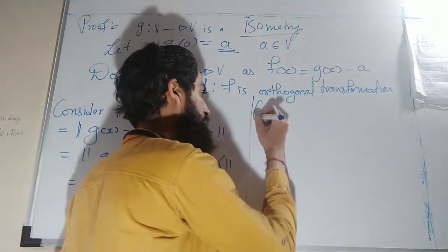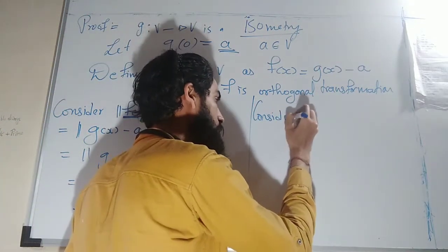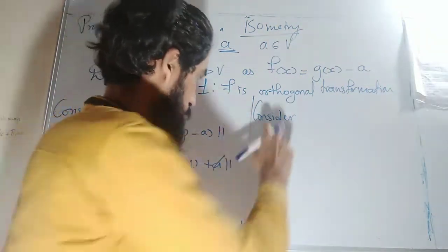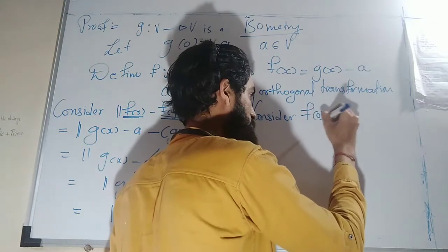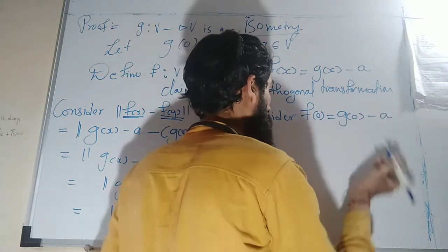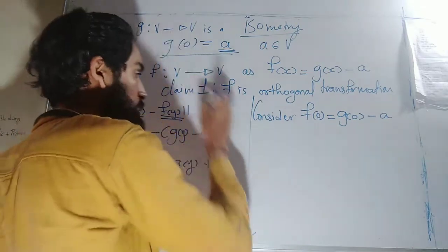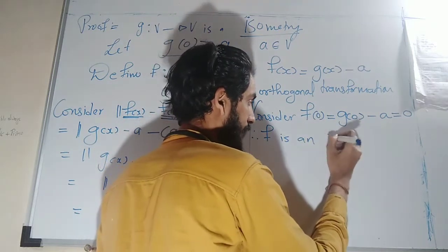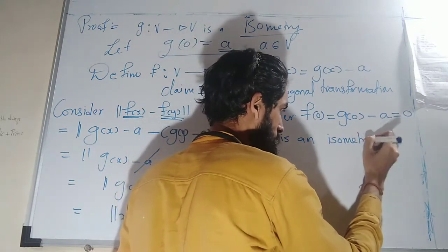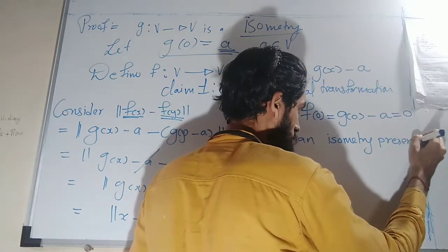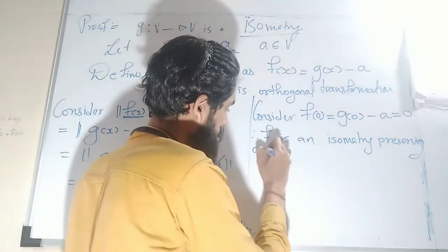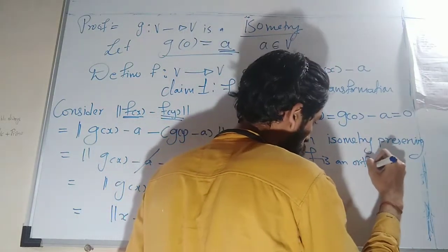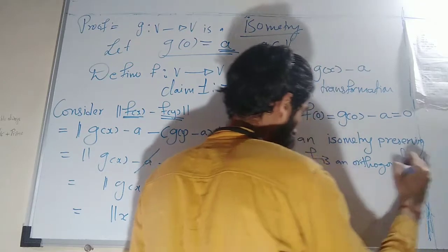Now considering f(0): f(0) = g(0) − a. We know that g(0) = a, so this equals a − a = 0. Therefore f preserves the origin. Since f is an isometry that preserves the origin, it implies that f is an orthogonal transformation.